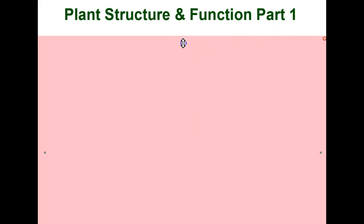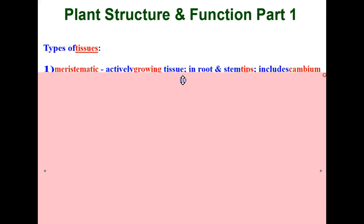Let's start with the types of tissues that exist in plants. We start with the meristematic tissue. This tissue is actively growing and it is in root and stem tips including the cambium.